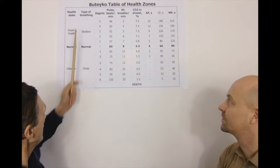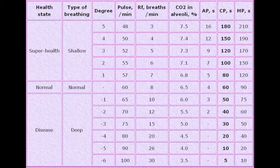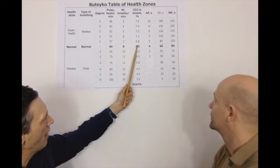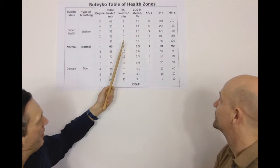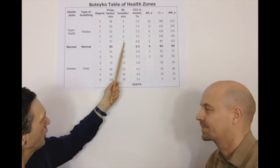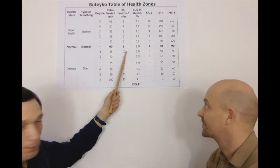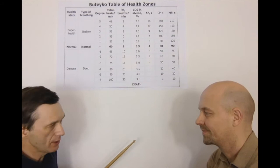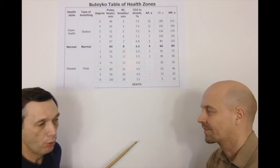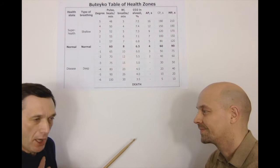According to Dr. Buteyko, there are super health states, normal health, and disease states. Normal health corresponds to the norm he established, and his medical norm for breathing is a little stricter than the official norm. The official norm requires about 5.3% CO2, which is 40 millimeters of mercury, as found in medical textbooks. When people have this normal medical breathing, it would be about 12 breaths per minute. But according to Buteyko, we should have about eight breaths at rest — during sitting or sleep. When people have disease states, we hyperventilate. Many studies show that people with heart disease, diabetes, cancer, COPD, and other health problems breathe much more than the medical norm.